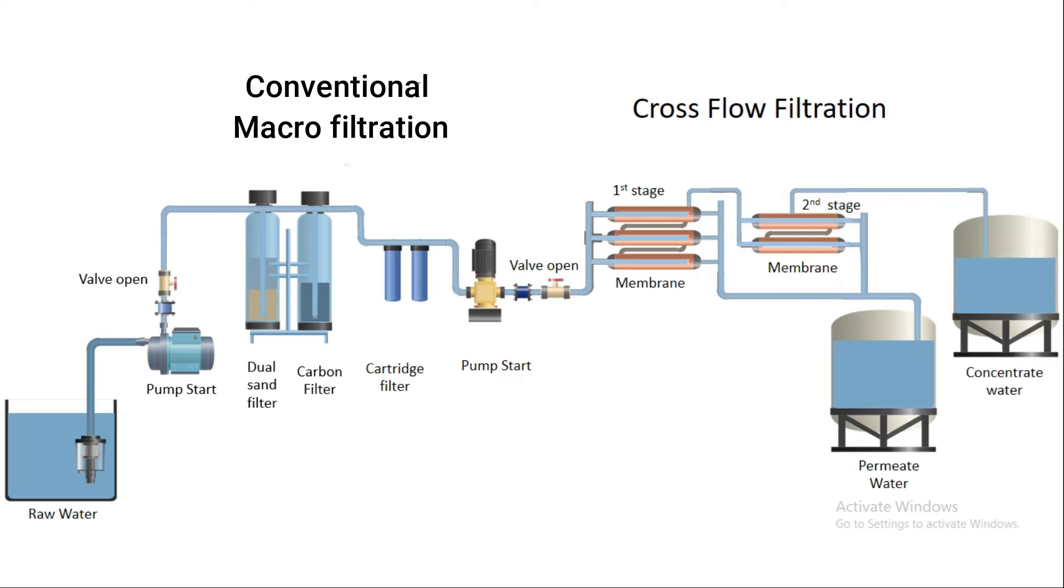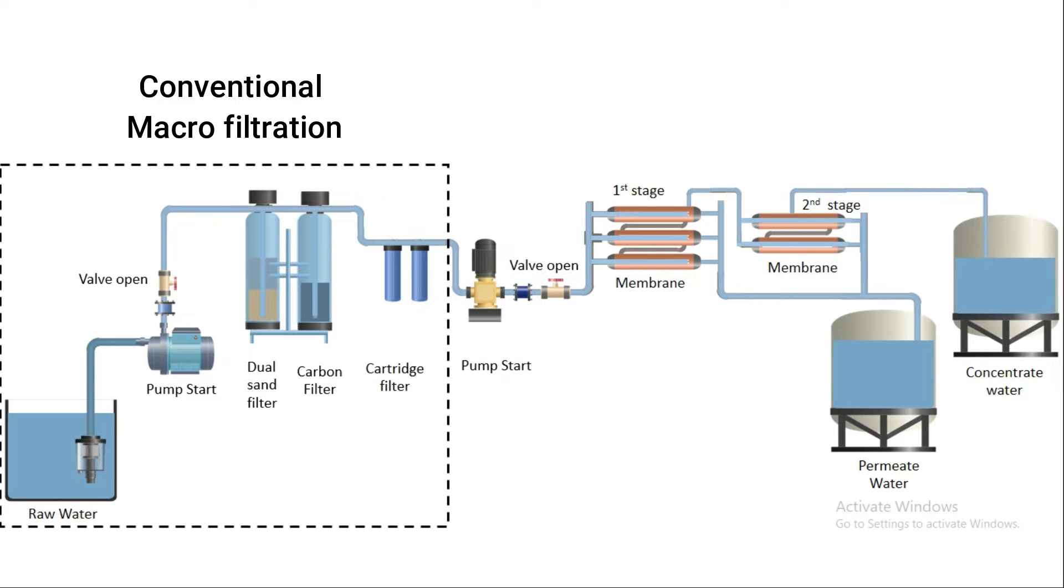In reverse osmosis plant, suspended solids are removed through conventional macro filtration process and dissolved solids removed through cross flow filtration process. Let's start with the macro filtration process.